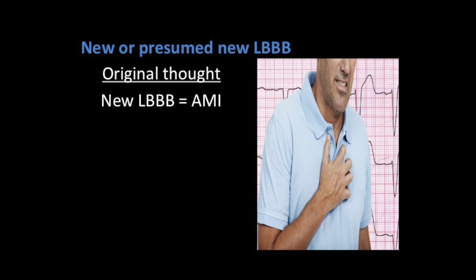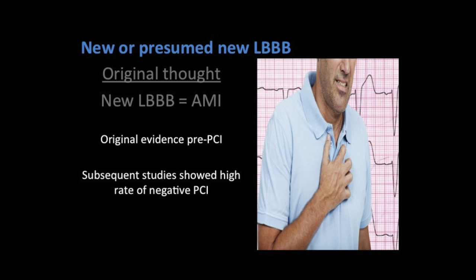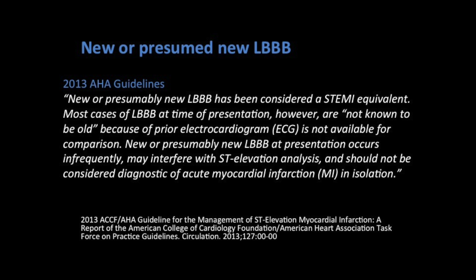Well, the original thought was that even if the person was asymptomatic, if they had a new or presumed new left bundle branch block, that equaled an acute myocardial infarction until proven otherwise. The evidence that these guidelines were based on were from the pre-cath and PCI age, where they really didn't have definitive evidence if the people in the studies were actually having myocardial infarctions, and this led to a very high rate of negative catheterizations. Due to this, and in light of recent studies that have used catheterization evidence, in 2013 the AHA changed their guidelines to say that new or presumed new left bundle branch block was no longer a diagnostic criteria for acute myocardial infarction.